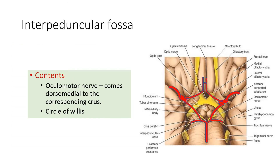Now let us discuss the contents of the interpeduncular fossa. You are seeing the two cerebral peduncles or crus cerebri. On the medial side you are seeing the oculomotor nerve coming out from the dorsomedial aspect. On its dorsal side you will be seeing the trochlear nerve, but it is not a content of the interpeduncular fossa.